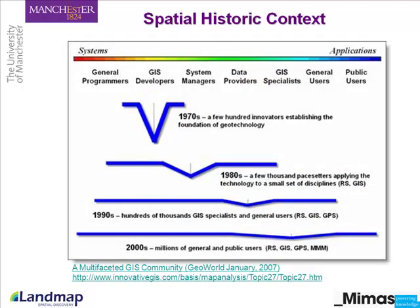Looking at the spatial historic context, spatial data went from something general programmers used to, in the 1970s, having dedicated GIS developers working specifically with spatial data. Around the mid-1970s, ESRI was formed by Jack Dangermond — one of the biggest GIS software companies providing ArcGIS. Also around the mid-1970s, different satellites launched for applications such as environmental change monitoring and crop monitoring — Landsat 1 is an example. In the 1980s, a few thousand pacesetters began applying the technology to a small subset of disciplines like GIS and geology.